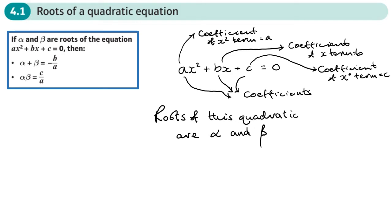What we find is that the sum of the roots, in other words alpha plus beta, is always equal to negative B over A. We can look at the coefficients and use those to work out what the roots add up to. So if B was five and A was two, then negative five over two would be what the roots add up to.